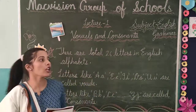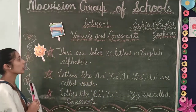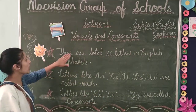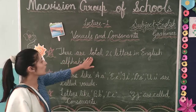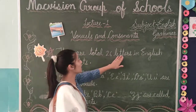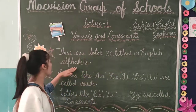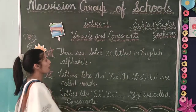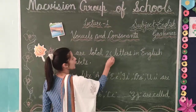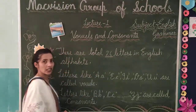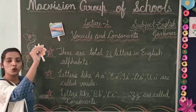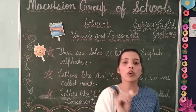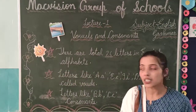Now vowels and consonants are part of the English alphabets. There are total twenty-six letters in English alphabets. English alphabets means how many letters? Twenty-six. A to Z — how many letters are there? Twenty-six.